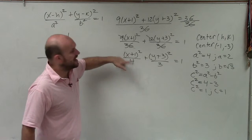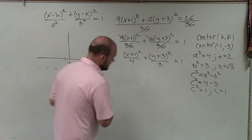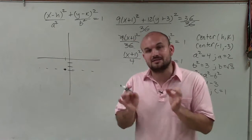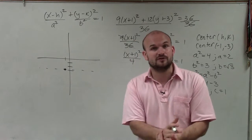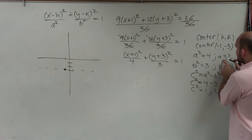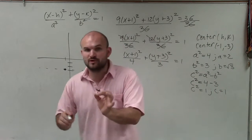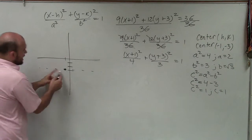Now remember, since my a² is under the x, my major axis is going to be horizontal. And why is that so important? The reason is because on your major axis lies the center, the foci, and the vertices. So when I know that a, which is a distance, when I know my a is 2, which is the distance from the center to both vertices, I know from my center, I'm going to go left.